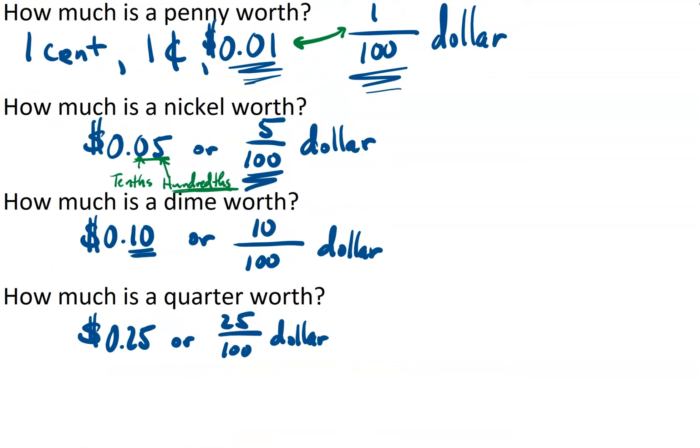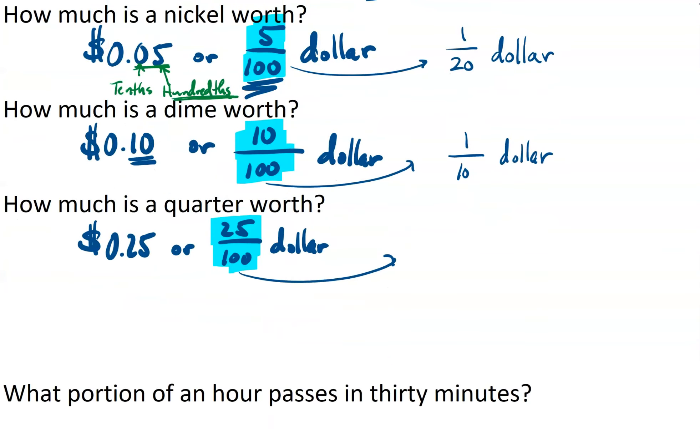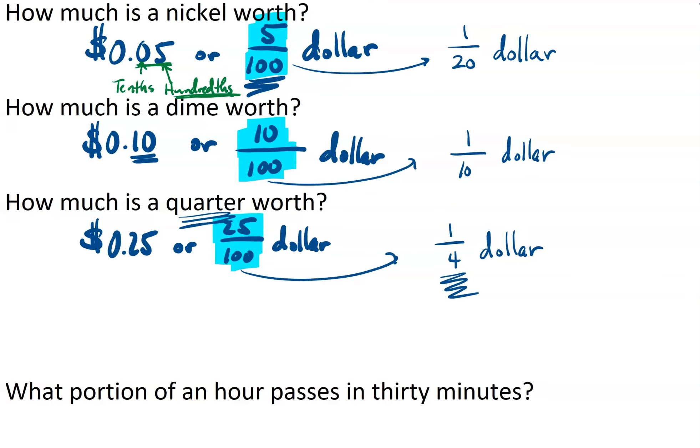Now, writing these fractions is helpful from a math teacher's perspective, or a math student's perspective, but one thing that you may know about fractions is that if we can reduce them to lowest terms, we should. And we can do so in these three instances here. The number 5 one-hundredths will reduce to one-twentieth. So we can say that a nickel is worth one-twentieth of a dollar. A dime is worth one-tenth of a dollar. And then finally, 25 over one-hundredths reduces to one-fourth of a dollar, or in other words, one-quarter of a dollar.